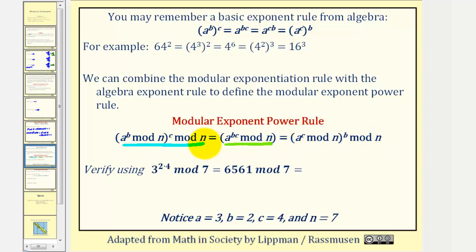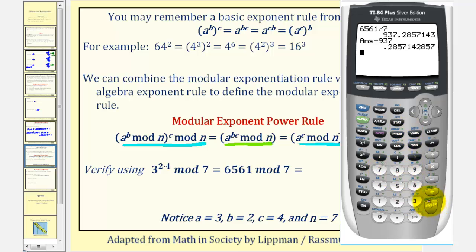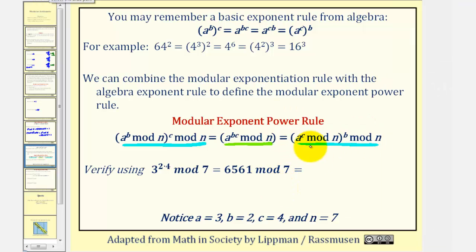Let's verify this exponent rule using three raised to the power of two times four mod seven. This is three to the eighth, which equals 6,561. We find 6,561 mod seven on the calculator: 6,561 divided by seven, subtract 937, times seven — the remainder is two. Therefore three to the power of two times four mod seven equals two.